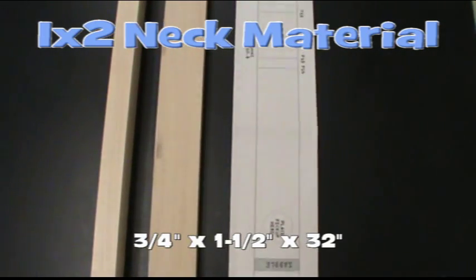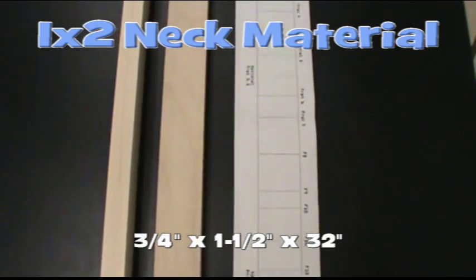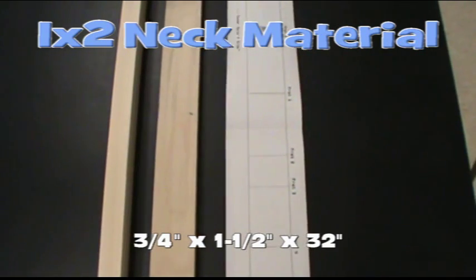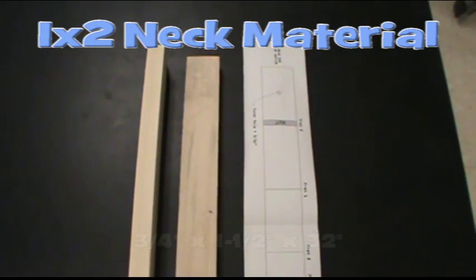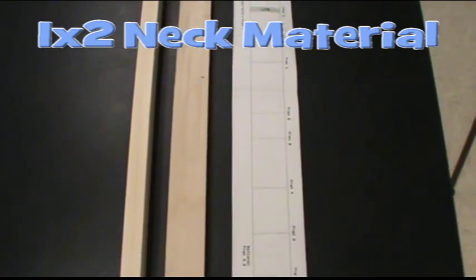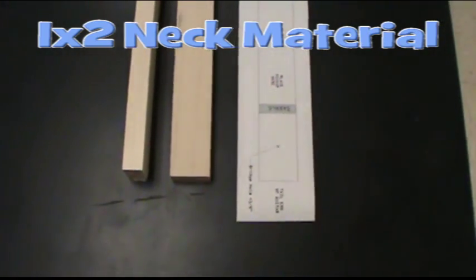The neck can be made out of any kind of material at all. In fact, you could do it on a tree in your front yard. We use a piece of one by two hardwood. The actual dimension is an inch and a half by three quarters and we cut it to 32 inches long.